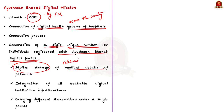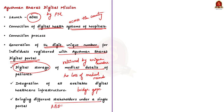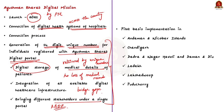With the implementation of Ayushman Bharat Digital Mission, old medical records will not get lost since every record will be stored digitally. The mission aims to integrate all available digital health infrastructure across the country, bridging the existing gap between different stakeholders of the healthcare ecosystem by bringing them under a single portal known as the Ayushman Bharat Digital portal. The mission was initially piloted across six union territories: Andaman and Nicobar Islands, Chandigarh, Dadra and Nagar Haveli and Daman and Diu, Ladakh, Lakshadweep and Puducherry, but is now being implemented throughout the country.